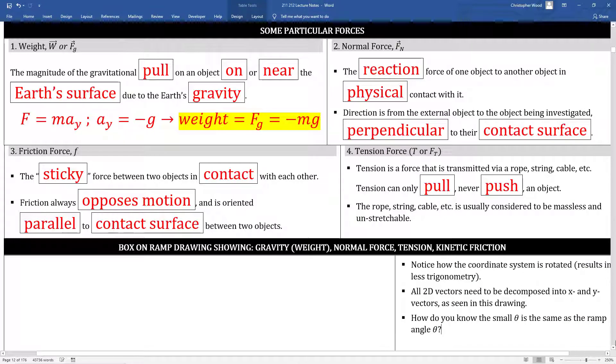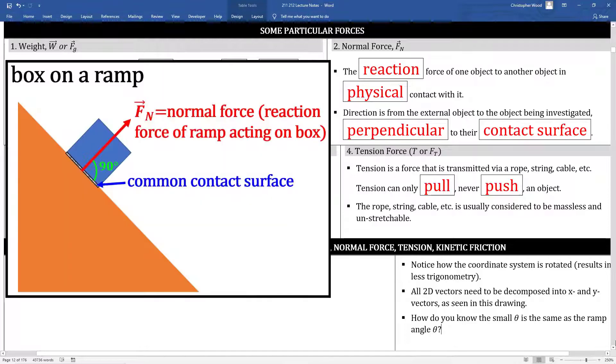Let's look at a few examples. No matter what kind of force we're looking at, it obeys Newton's first, second, and third laws. Box number one, the weight force. Remember, force is a vector, so you have to worry about direction and magnitude. In this case, the direction is straight down towards the center of the earth. The magnitude is directly related to the object's mass. Box two, the normal force. This is a Newton's third law reaction pair. Keep this visual and description in mind. The normal force is the reaction force of one object to another object in physical contact with it. The direction is from the external object to the object being investigated, perpendicular to their shared contact surface.